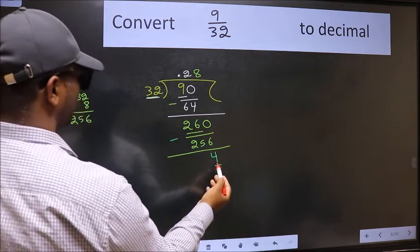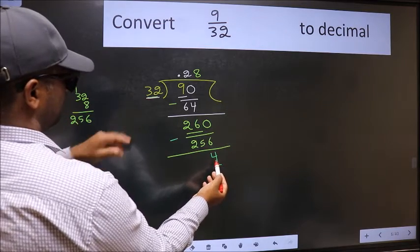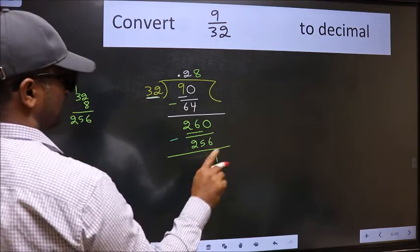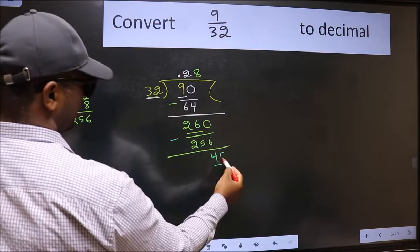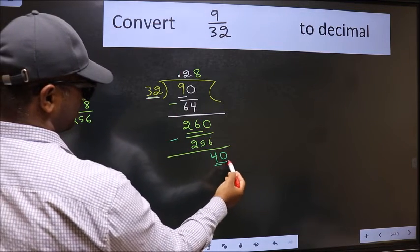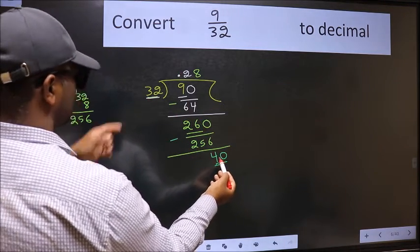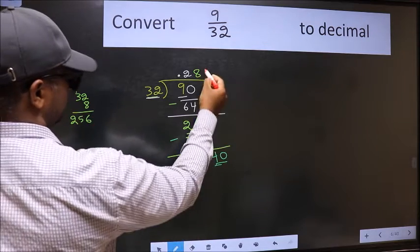Now here we have 4 and here 32. 4 is smaller than 32, and we already have the decimal, so directly take 0. So 40. A number close to 80 in the 32 table is 32.